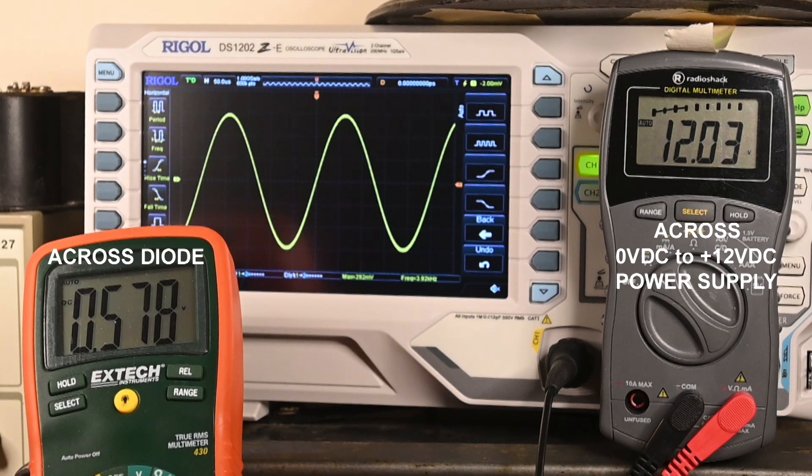And we've got our pretty sine wave going through that diode with no distortion because that diode is forward biased. It is turned on all the way, and pretty much in that circuit right now that diode is a wire.